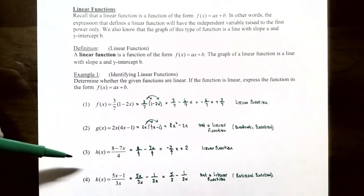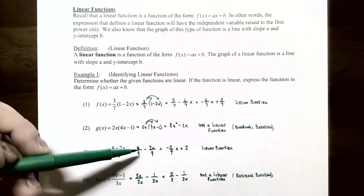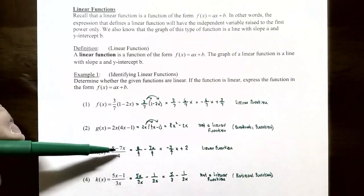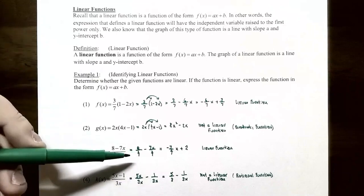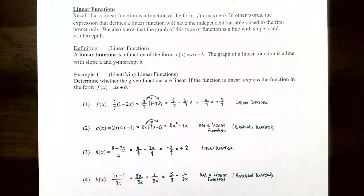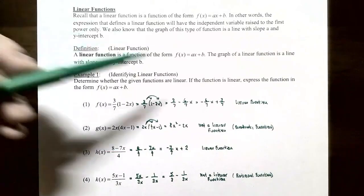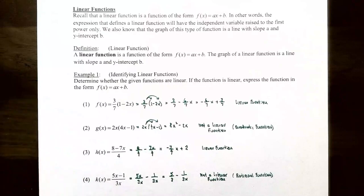Number three: h(x) = (8 - 7x)/4. You can rewrite this as two fractions: 8/4 minus 7x/4. Simplifying gives 2 minus 7/4 x, or negative 7/4 x + 2. This is of the form for a linear function, so the slope a is negative 7/4 and the y-intercept b is 2.